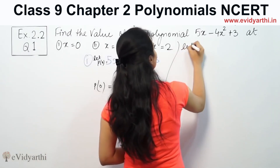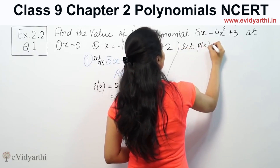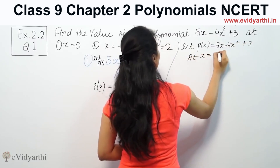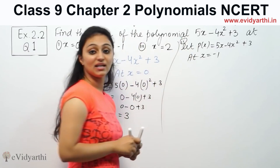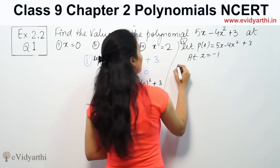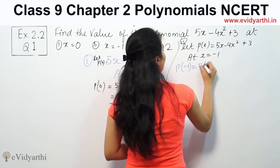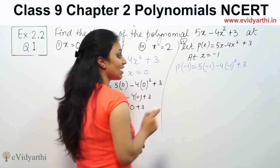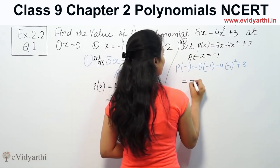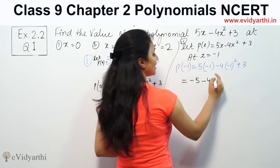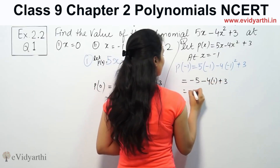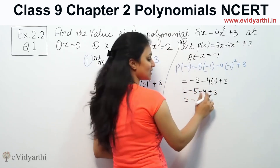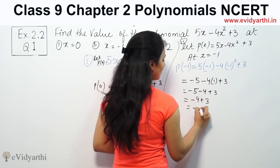Same way, p(x) equals 5x minus 4x squared plus 3 at x equals minus 1. So 5 into minus 1 is minus 5, minus 4 times minus 1 squared is 1, plus 3. So minus 5 minus 4 plus 3, which gives minus 9 plus 3, equals minus 6.